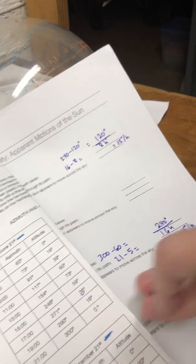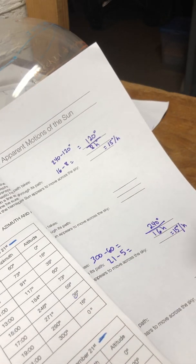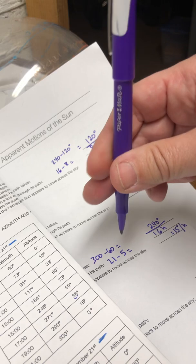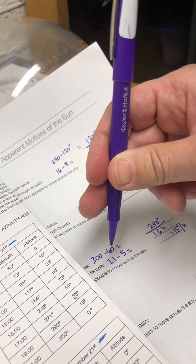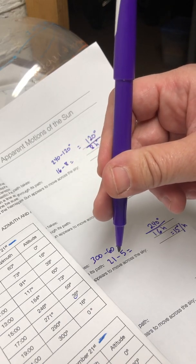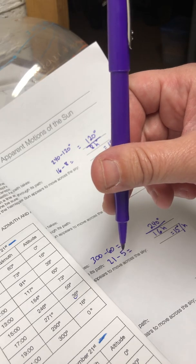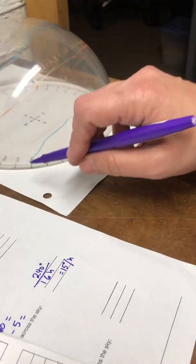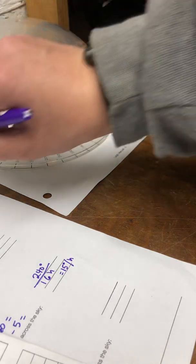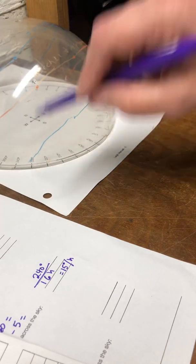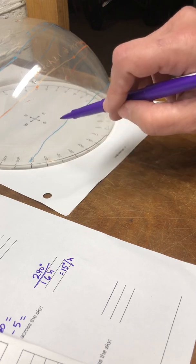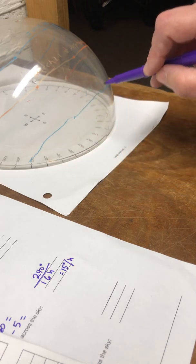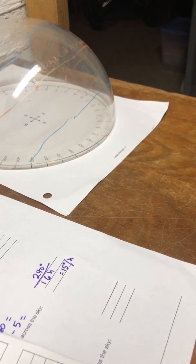Any idea why that is? Think about the rotation of the earth. The earth rotates at a very specific speed. It rotates 15 degrees per hour. So even though the sun is traveling at different paths across our sky throughout the year, it's still moving at the same speed, 15 degrees per hour.